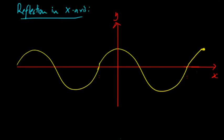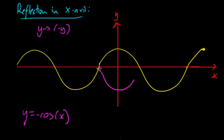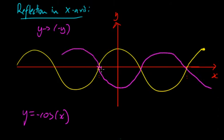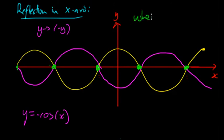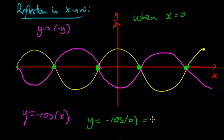The same approach applies to cosine graphs. Reflecting in the x-axis means replacing y with negative y, giving y = -cos(x). The graph comes down from x = 0. You can verify this: the x-intercepts stay the same, and at x = 0, y = -cos(0) = -1. So the graph starts at -1 — that's a minimum point — and in terms of the wave's amplitude it's a maximum in magnitude. So you know the graph starts at the bottom and curves up from there.